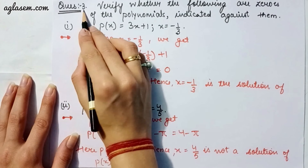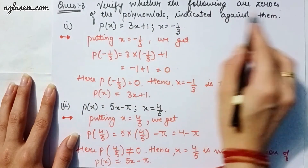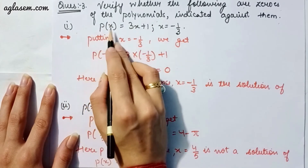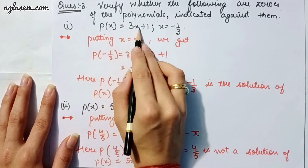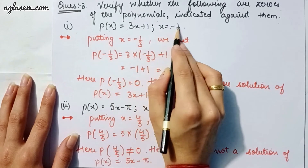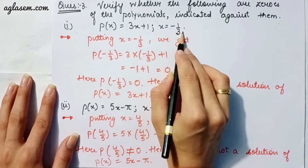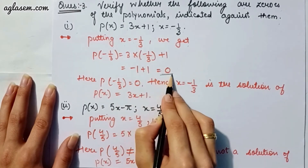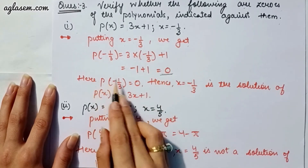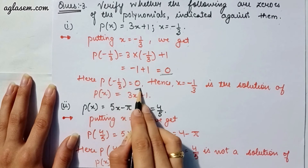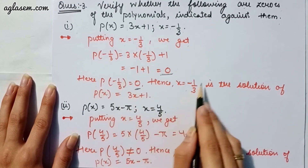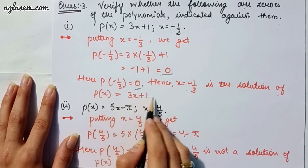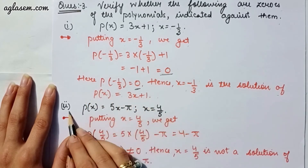Moving to our third question: verify whether the following are zeros of the polynomial indicated against them. Part 1 says p(x) = 3x + 1 and x = -1/3. Putting x = -1/3 we get 0, so p(-1/3) = 0, which means x = -1/3 is a zero of p(x) = 3x + 1.